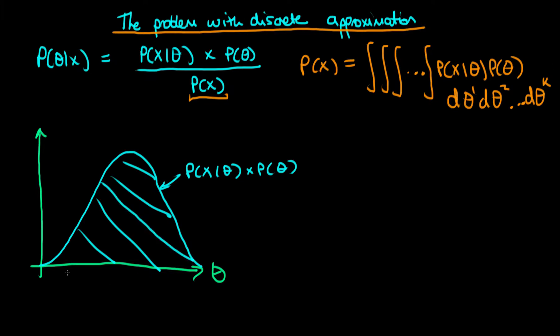In integrating what we'd be doing is working out the area underneath this curve. We're just imagining that we've got a univariate parameter for the time being. But instead what we could do alternatively is we could discretize theta so that we say it only exists at discrete values along this dimension. And then what we could do is we could evaluate the likelihood times the prior in each of these discrete grid points.